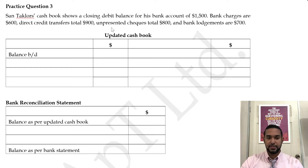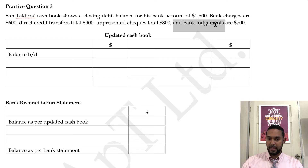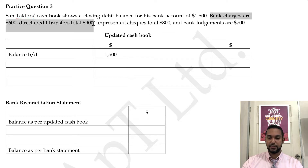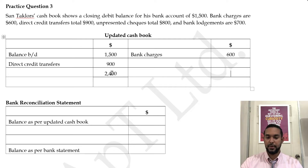Let's take a look at a fresh question. Santa Claus's cash book shows a closing debit balance for his bank account of $1,500. Bank charges are $600, direct credit transfers total $900, un-presented checks total $800, and bank lodgements are $700. The bank charges and direct credit transfers are items found on the bank statement but not in the cash book, so we update the cash book. Direct credit transfers of $900 go on the debit side, bank charges of $600 go on the credit side. The updated cash book balance is $1,800.